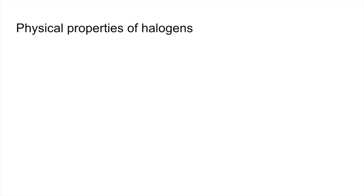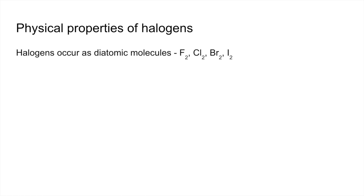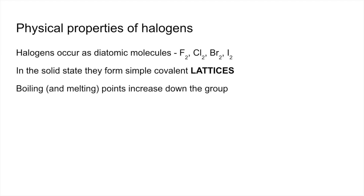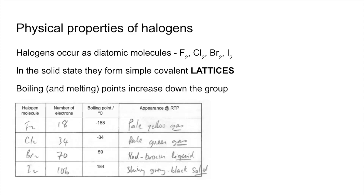We'll start with the physical properties of halogens. Halogens occur as diatomic molecules — F2, Cl2, etc. In the solid state they form simple covalent lattices. Their boiling and melting points increase down the group. There's a summary table of all the halogen molecules with the total number of electrons in each diatomic molecule, and you can see the boiling points are increasing.